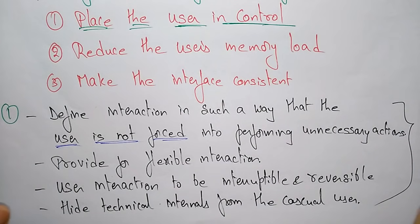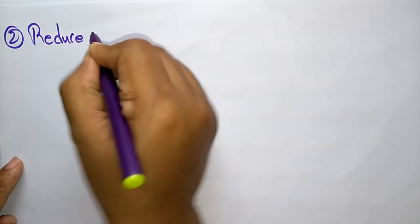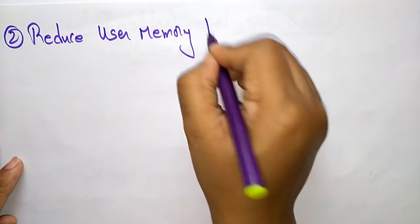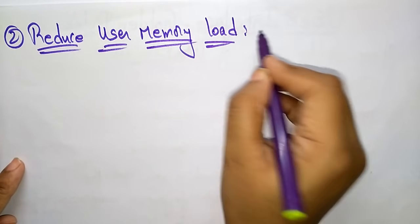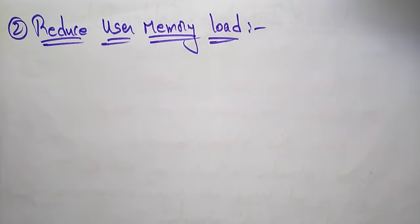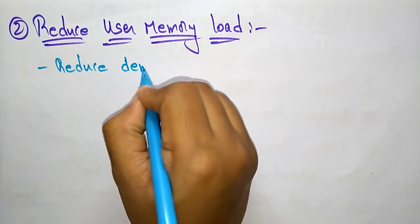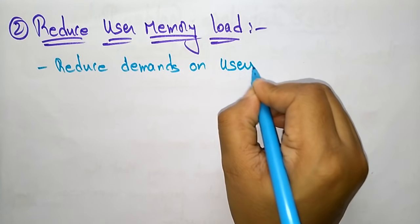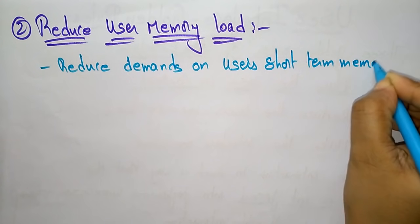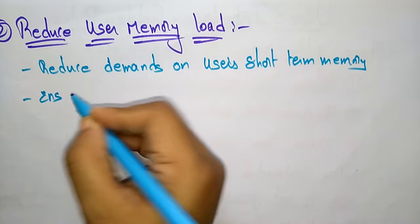Now coming to the second golden rule: 'reduce the user's memory load.' Why do we call this a golden rule for user interface? First, reduce demands on the user's short-term memory. We have to reduce the burden on short-term memory, and we have to establish meaningful defaults so that we can reduce the user memory load.